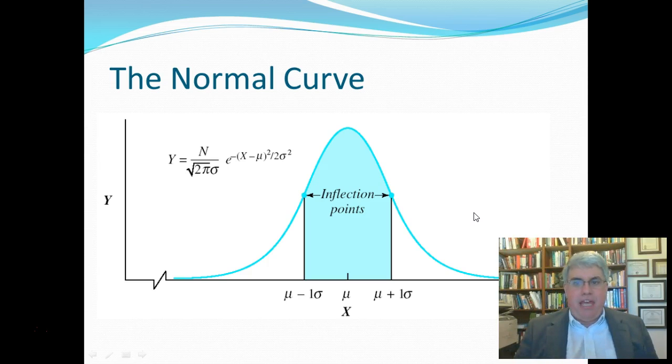Now, here is a picture of the normal curve, as well as the equation. Now, first of all, let me tell you that we'll never have to use the equation. It's really kind of an ugly equation. It's interesting, though, because it has some famous constants. It's got the square root of 2. It's got pi. It's got e. All of that describes the normal curve.